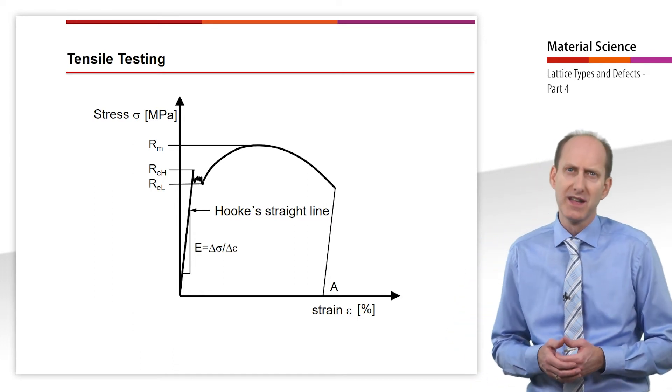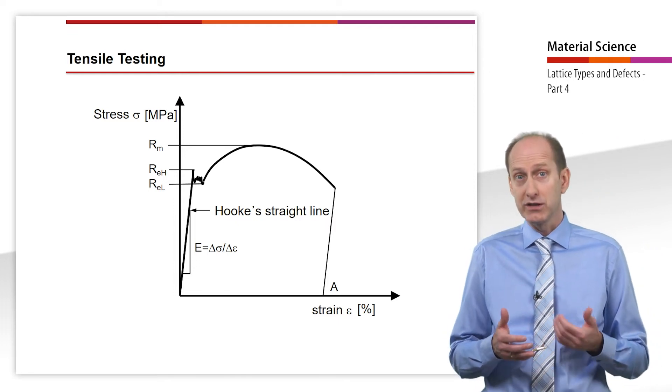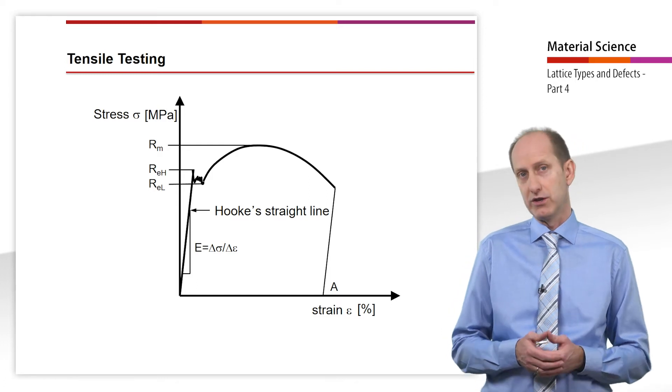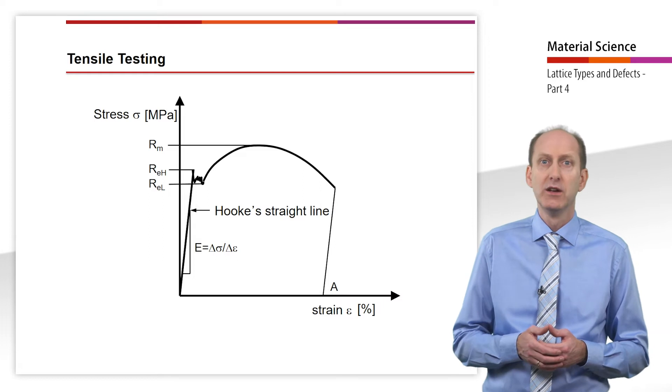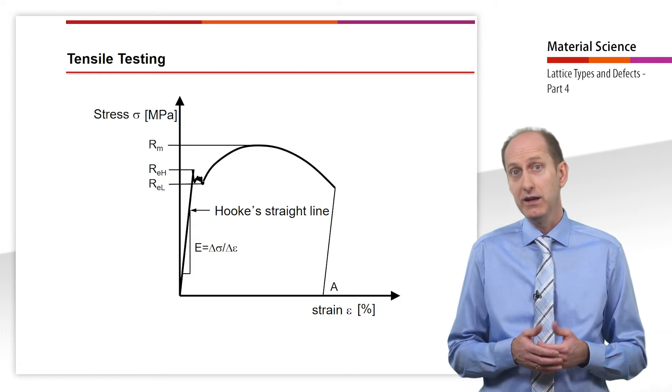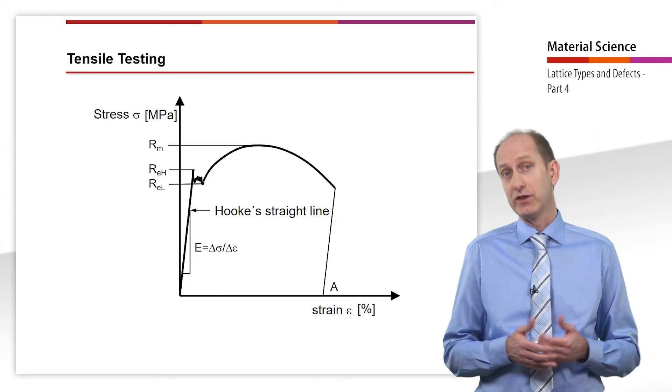Normally structures are designed in such a way that the load they are subjected to remains within this pure elastic range. The slope of Hooke's straight line corresponds to the modulus of elasticity E, the so-called Young's modulus, which is a measure of a material's stiffness.